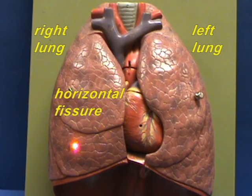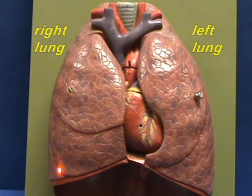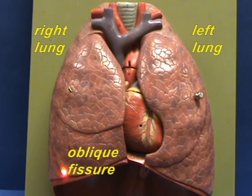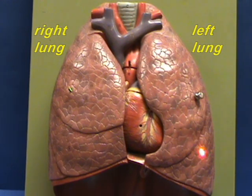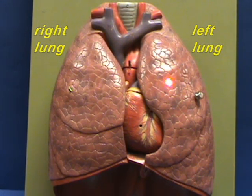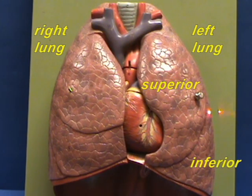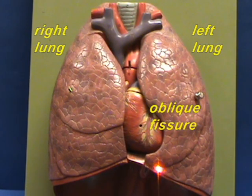The middle lobe is separated from the inferior lobe by an oblique fissure. On the left side, the left lung has two lobes — a superior lobe and an inferior lobe — and these lobes are separated by an oblique fissure.